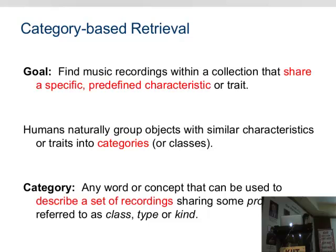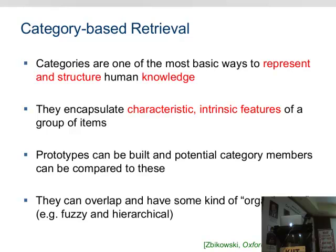A category can be any word or concept used to describe a set of recordings that share some property. Synonyms for categories include property, class, type, and kind. Categories are one of the most basic ways to represent and structure human knowledge — we unconsciously group items without even noticing it. A category encapsulates a certain characteristic or intrinsic feature of a group of items. Importantly, prototypes emerge: once you have a group of items, you can establish a prototype representing the whole group, and compare a new item against it rather than against all members.